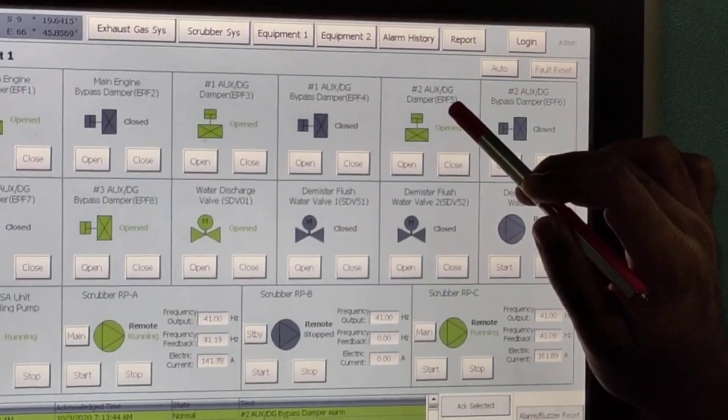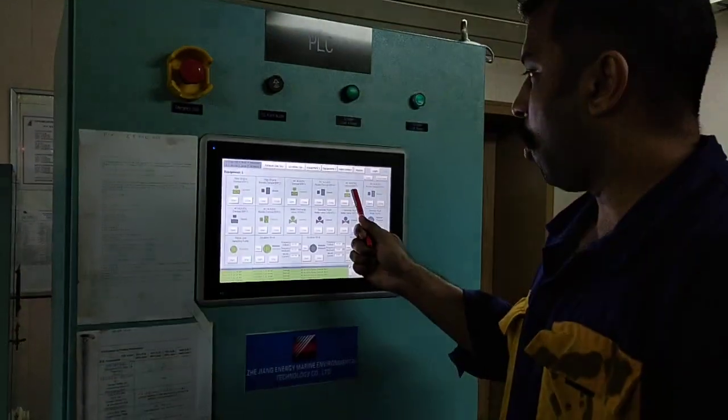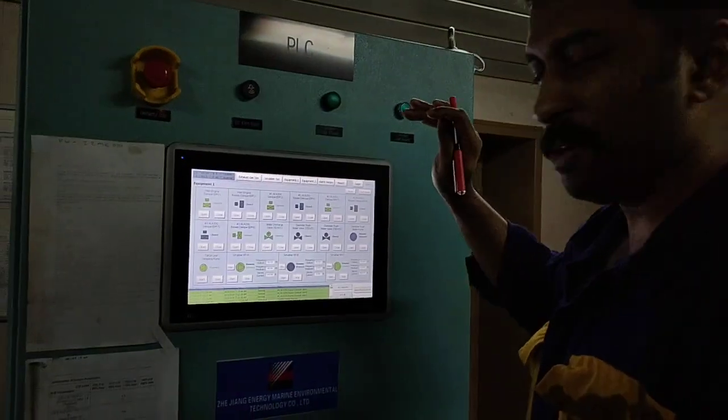EP F pipe. Note down this number, go to the tower. You have to open and close this valve manually once. Then you put the system again in automatic.